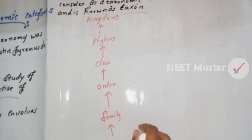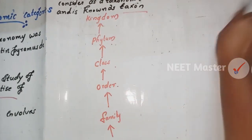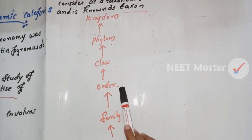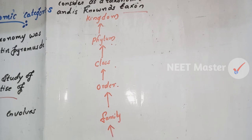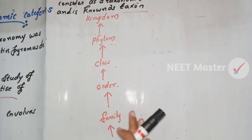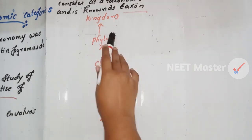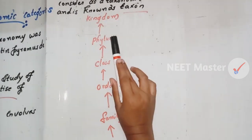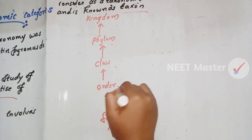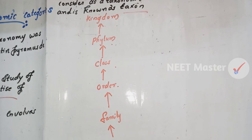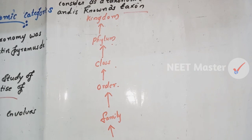For example, classifying Homo sapiens: the phylum is Chordata, the class is Mammalia, the order is Primates, the family is Hominidae, the genus is Homo, and the species is sapiens. This is a systematic framework using the binomial nomenclature system.